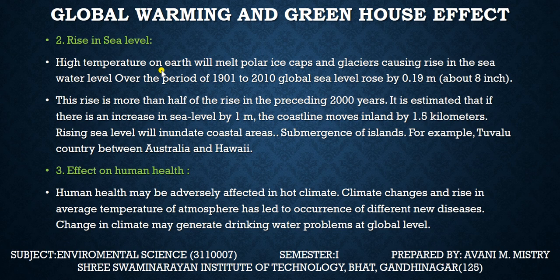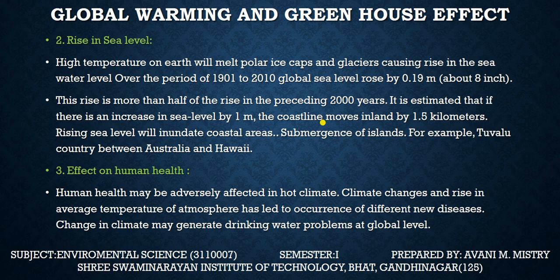Rise in sea level: the high temperatures on Earth will melt polar ice caps and glaciers, causing a rise in sea water level. Over the period 1901 to 2010, global sea level rose by 0.19 meters — about 18 cm. This rise is more than half of the rise in the preceding 2,000 years. It is estimated that an increase in sea level by 1 mm moves the coastline inland by 1.5 kilometers. Rising sea levels will inundate coastal areas and cause submergence of islands.